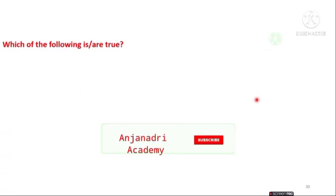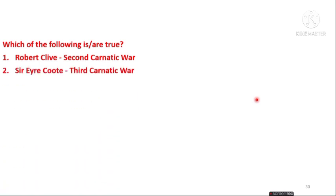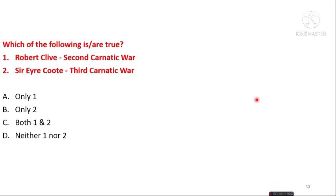The next question asks which of the following are true: Robert Clive belonged to the Second Carnatic War, and Sir Eyre Coote belonged to the Third Carnatic War. The options are only 1 is correct, only 2 is correct, both 1 and 2 are correct, and neither is correct. The answer is option C — both 1 and 2 are correct. Robert Clive was the British head during the Second Carnatic War, and Sir Eyre Coote headed the British in the Third Carnatic War.